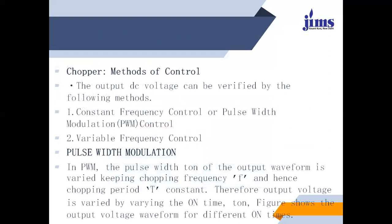Regarding chopper methods of control, the output DC voltage can be varied by the following methods: constant frequency control or pulse width modulation (PWM) control, and variable frequency control. In the PWM method, the pulse width or turn-on time T-on of the output waveform is varied while keeping the chopper frequency f and hence the chopper period T constant. Therefore, the output voltage is varied by varying the on time T-on.